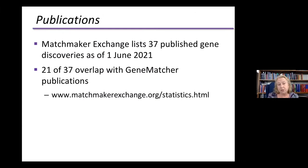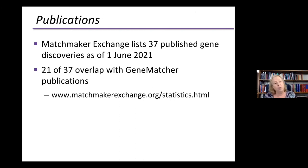In terms of publications out of the Matchmaker Exchange, there are 37 published gene discoveries as of June 1st, and 21 of the 37 overlap with GeneMatcher publications — covering people who match within GeneMatcher as well as those who match with other nodes within the Matchmaker Exchange.